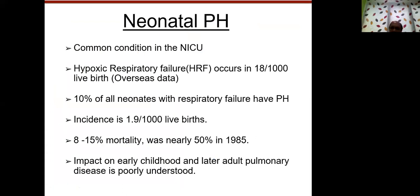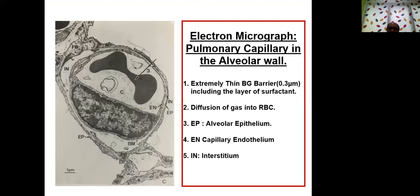Neonatal PPHN is a quite common condition in the ICU. It contributes to around 18 per thousand live births — this is overseas data — causing hypoxic respiratory failure. Out of that, 10% of neonates with respiratory failure have pulmonary hypertension. The incidence is as close as 2 per thousand live births, and mortality is around 8 to 15%, compared to nearly 50% in the early eighties.